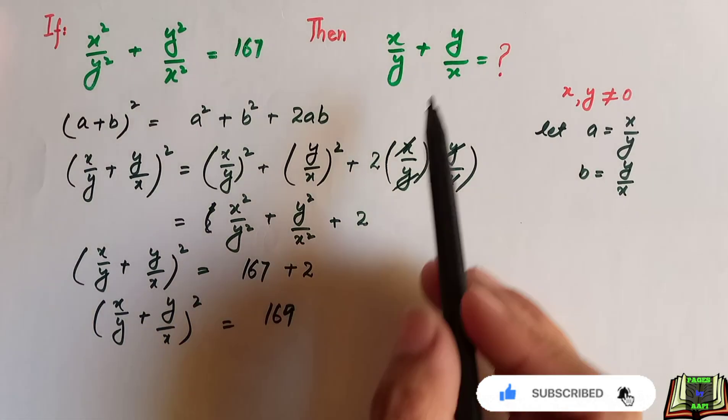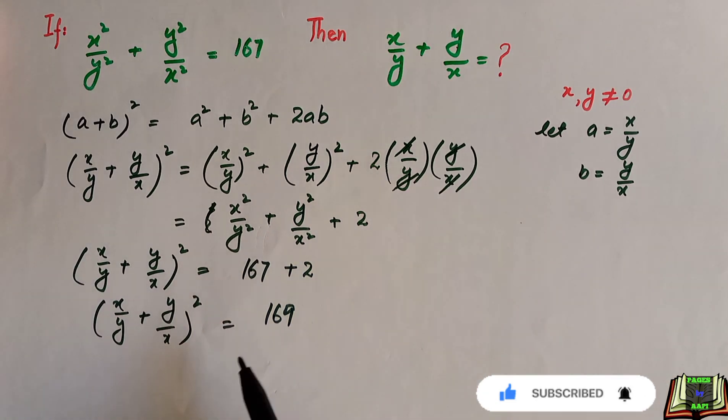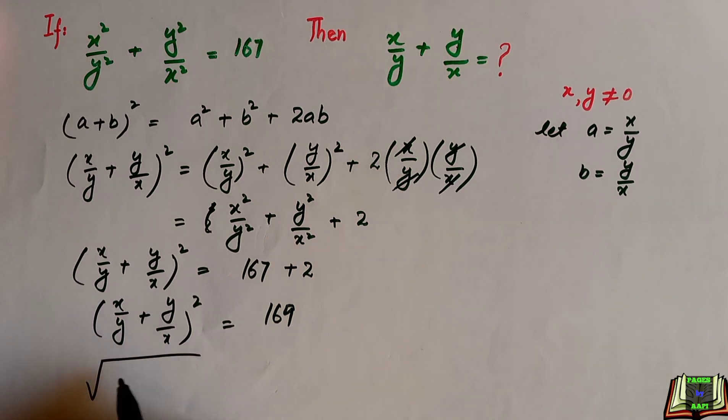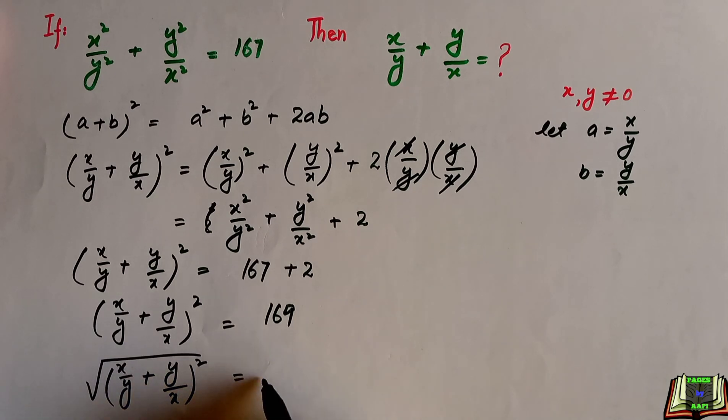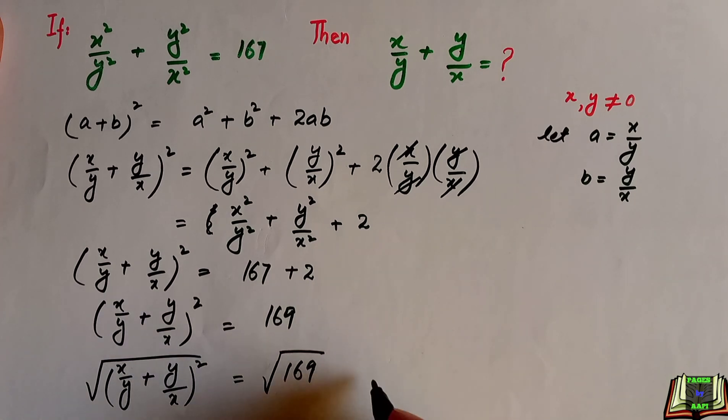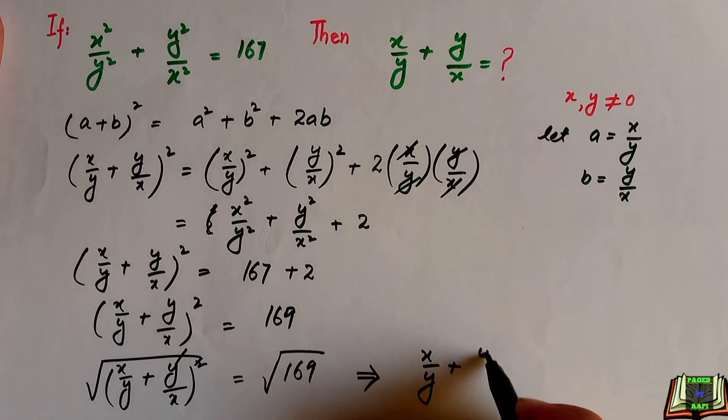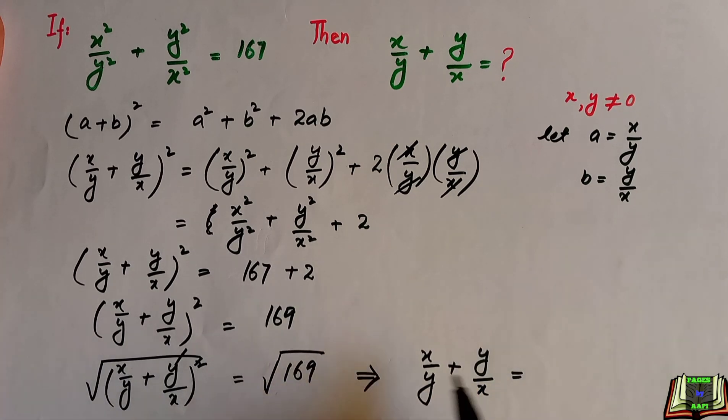As we can see, the left hand side is in the square form but we have to find the answer without square. So what we are going to do, we are going to take the square root on both sides. The square and the root will be cancelled out. We are left with x divided by y plus y divided by x is equal to the square root of 169, which is plus minus 13.